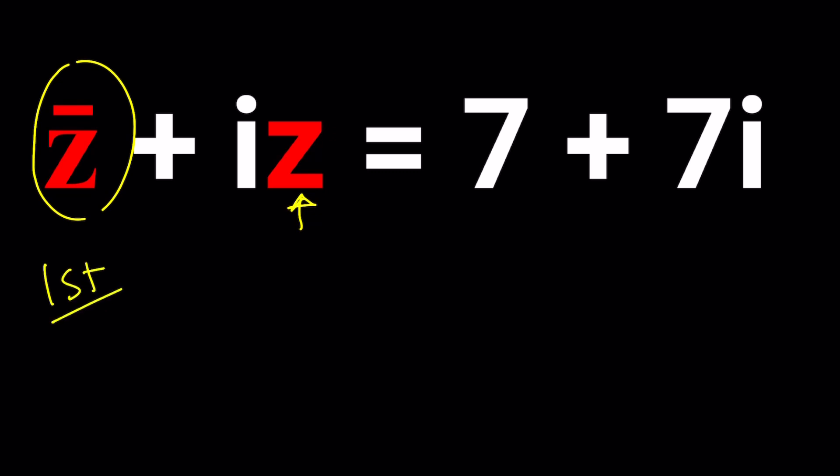The first method will be pretty standard for these kinds of equations, especially if Z bar and Z or Z and the absolute value of Z and so on are involved. You should call Z something. Z is a complex number. It has two components. So we can write Z as A plus B I, which is also the name of this channel. So Z equals A plus B I.